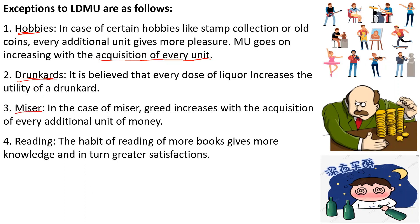Third is the case of a miser. When a person who plays poker goes on continuously winning the game, his greed increases, and with the acquisition of additional money he feels more pleasure and plays more. In such cases, this law will fail. Fourth is reading — if the habit of reading more and more books gives more knowledge and greater satisfaction, this law also fails in this case.